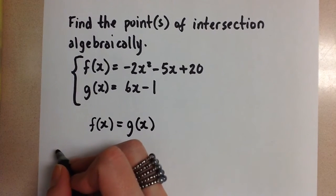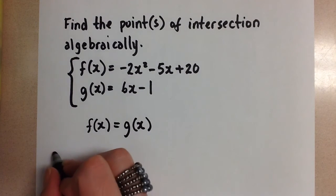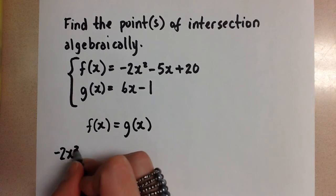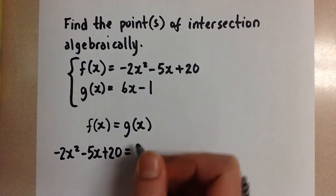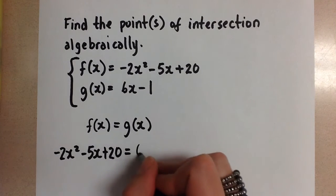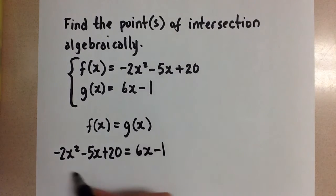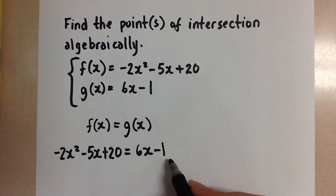So we're going to sub in on the left hand side, negative 2x squared minus 5x plus 20 equals 6x minus 1. There's the f(x) and there's the g(x).